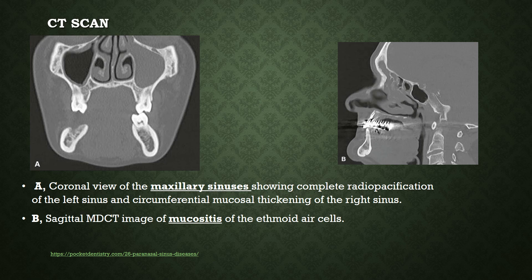This CT scan of the maxillary sinus shows a coronal view in picture A with complete opacification of the left sinus and circumferential mucosal thickening of the right sinus. Picture B is a sagittal view of a multi-detector CT scan showing mucositis in the ethmoidal region or ethmoidal air cells.